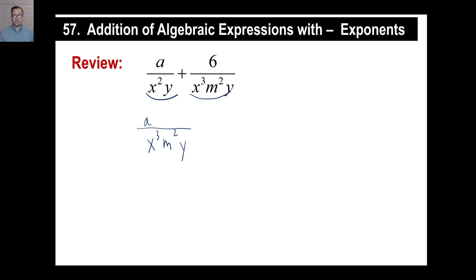What we did to the bottom was we had to multiply by x to make this x³. So there's our x. And we had to multiply by m². This one on the right actually already has what we need, so we can just leave it the way it is.